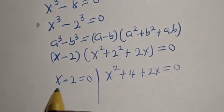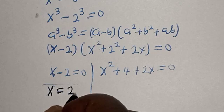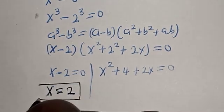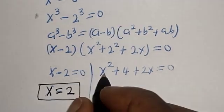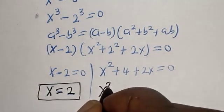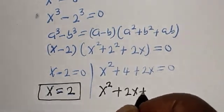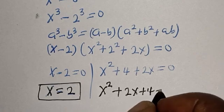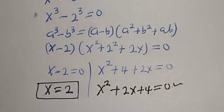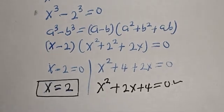Now there are two cases: s minus 2 is equal to 0, giving s is equal to 2 as one value; or s squared plus 2s plus 4 is equal to 0, which is a quadratic equation that can be solved using the quadratic formula.